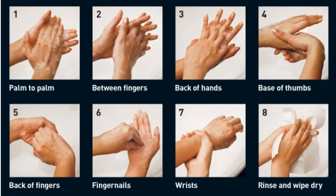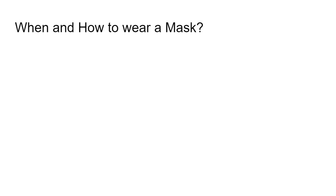Here are the steps of hand washing. Step 1 is palm to palm. Step 2 is between the fingers. Step 3 is back of the hands. Step 4 is base of the thumbs. Step 5 is back of the fingers. Step 6 is fingernails. Then rinse and wipe dry using fresh tissue paper. If there is a cloth, avoid using a common cloth.